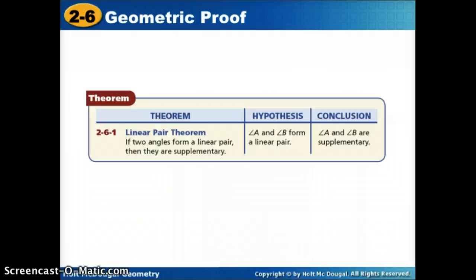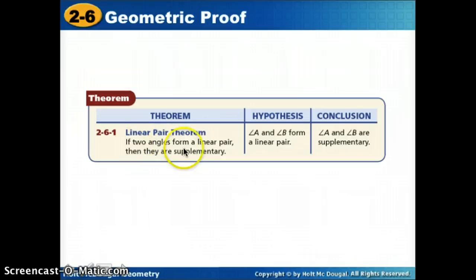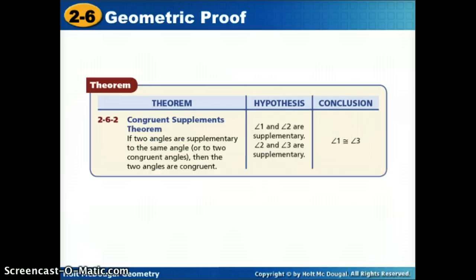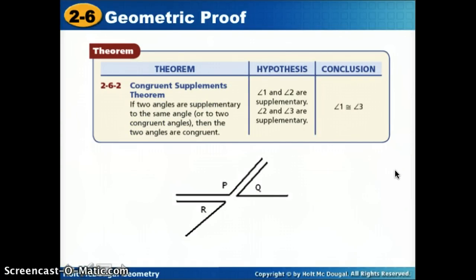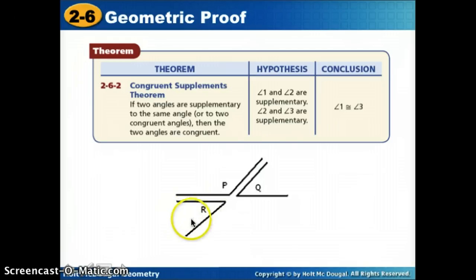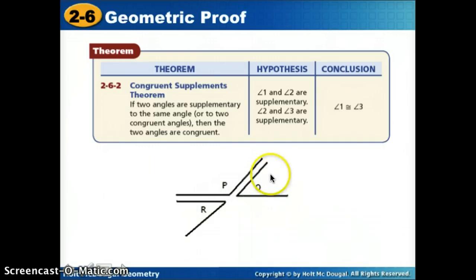The first theorem is the linear pair theorem. We've talked about linear pairs — two angles that are next to each other and make a line. The linear pair theorem says if two angles form a linear pair, then they are supplementary. Another one is the congruent supplements theorem: if two angles are supplementary to the same angle, then those two angles are congruent. For example, if angle R and angle Q are both supplementary to angle P, then R is congruent to Q.